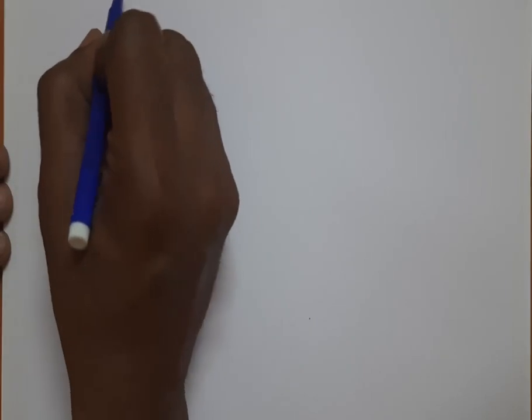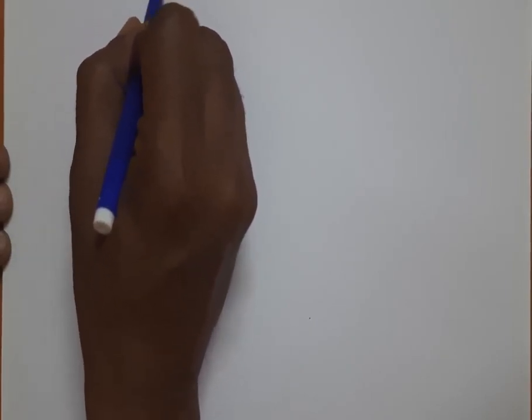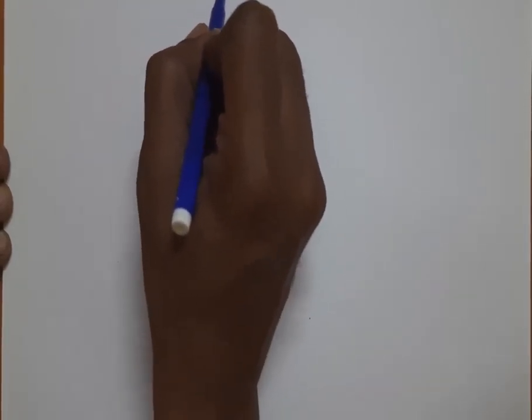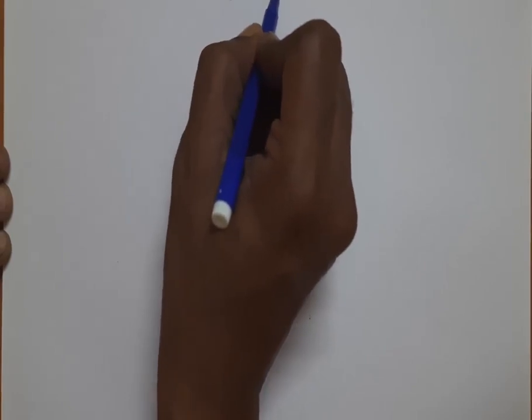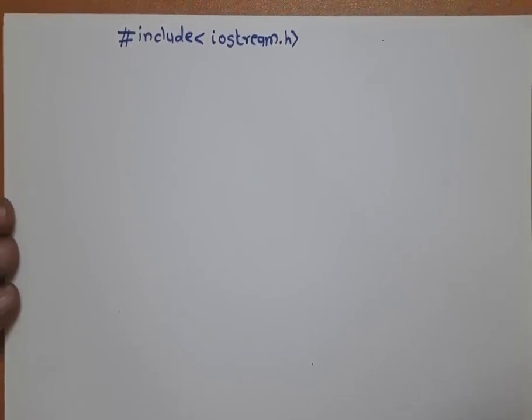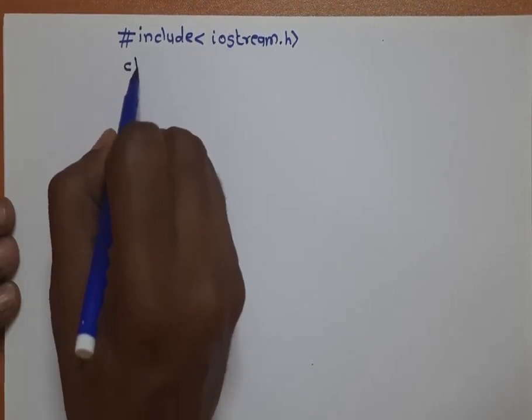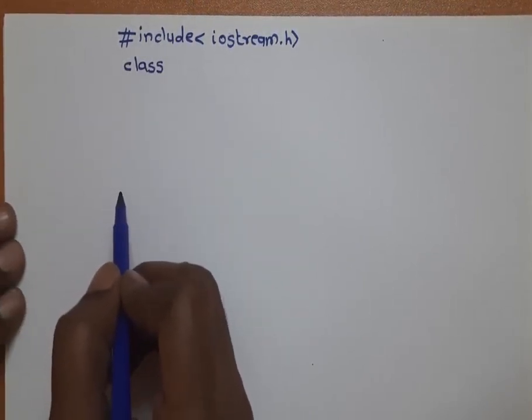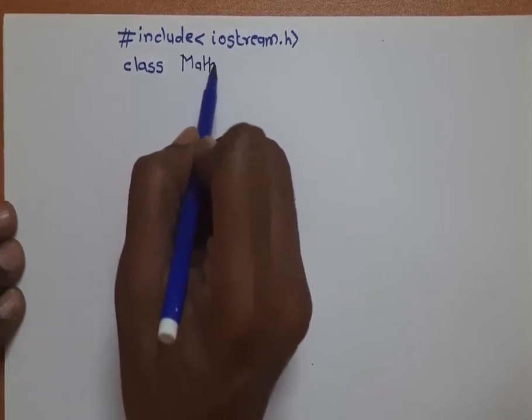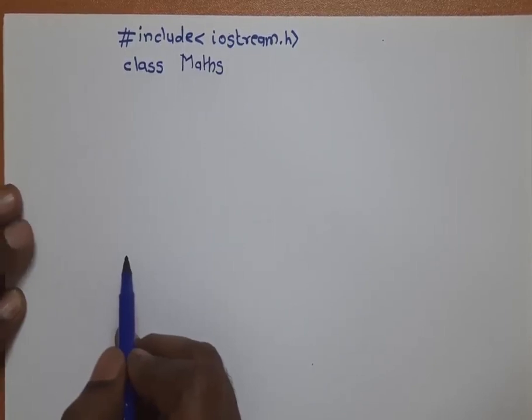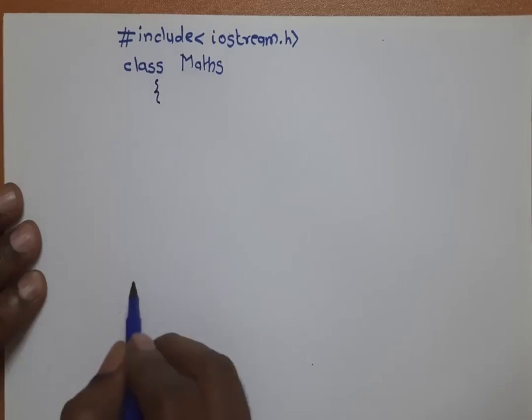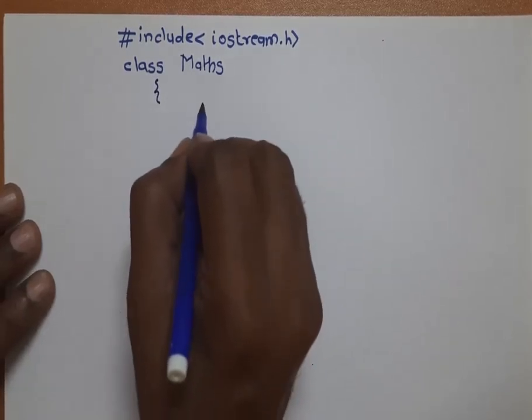Now I will take a first example, and then we will discuss why the object oriented programming system concept comes into the picture. We start with #include <iostream.h>, then I start the class with the reserved word 'class' and give the class name as 'Maths', with 'M' as capital, followed by an open curly bracket.